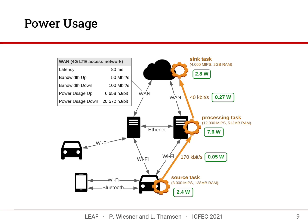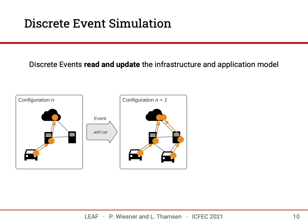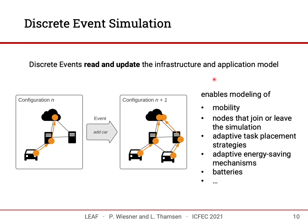A static configuration only represents the system state at a specific point in time. To enable simulation of dynamic environments over time, LEAF combines the graph-based analytical model with discrete event simulation. Using events, users can read and update infrastructure and application graphs, enabling modeling of mobility, nodes joining or leaving at any time, applications starting and stopping, adaptive task placement strategies reacting to system state changes, adaptive energy-saving mechanisms that turn off idle nodes, and energy-aware hardware such as batteries updating their state of charge over the course of the simulation.